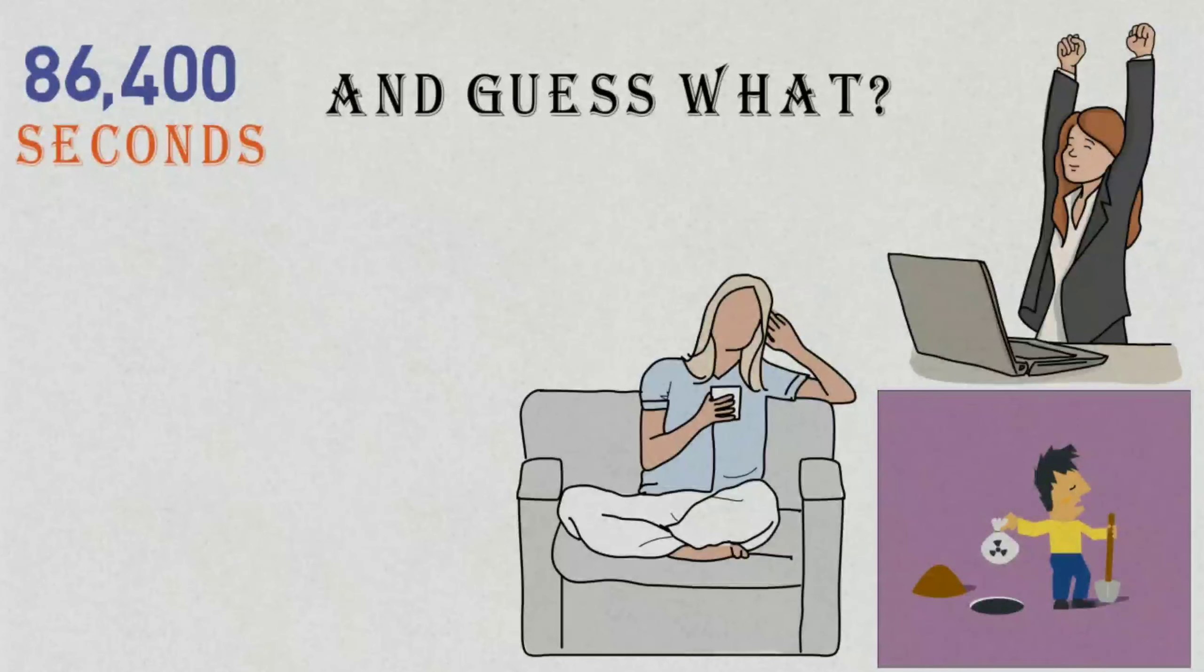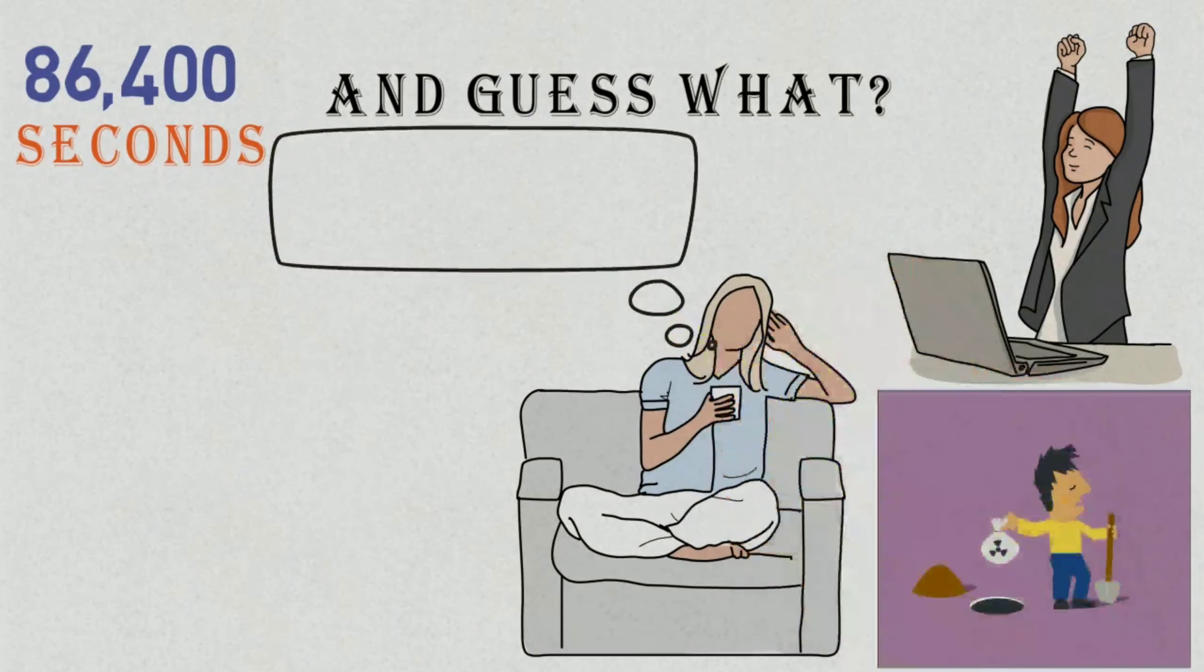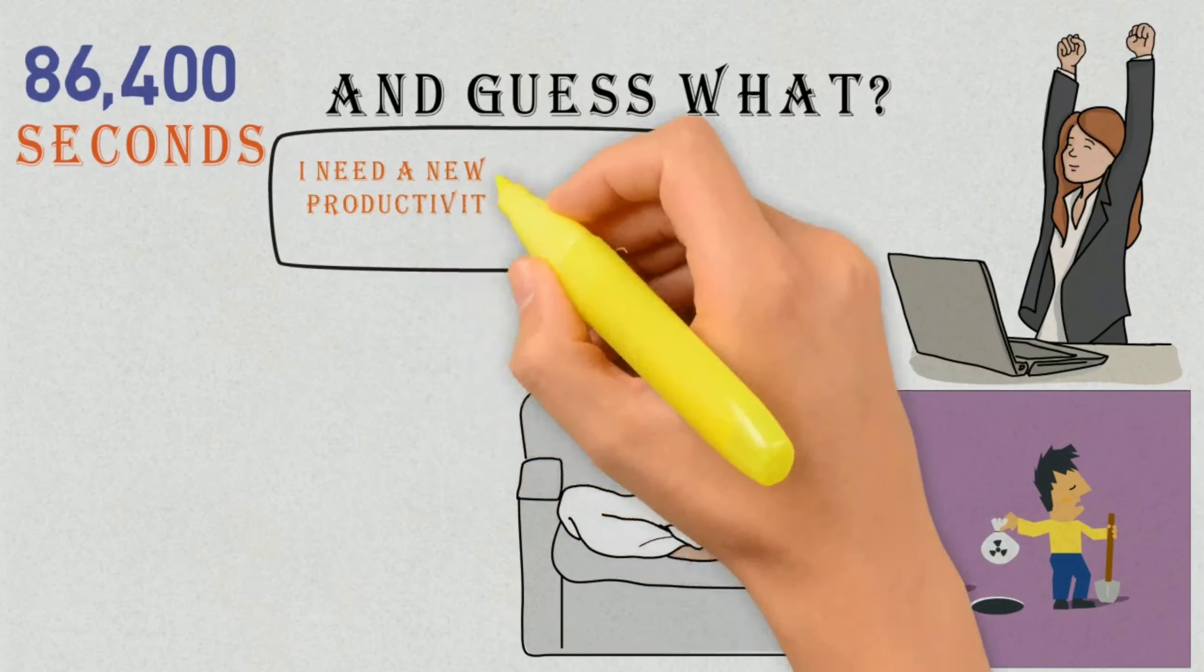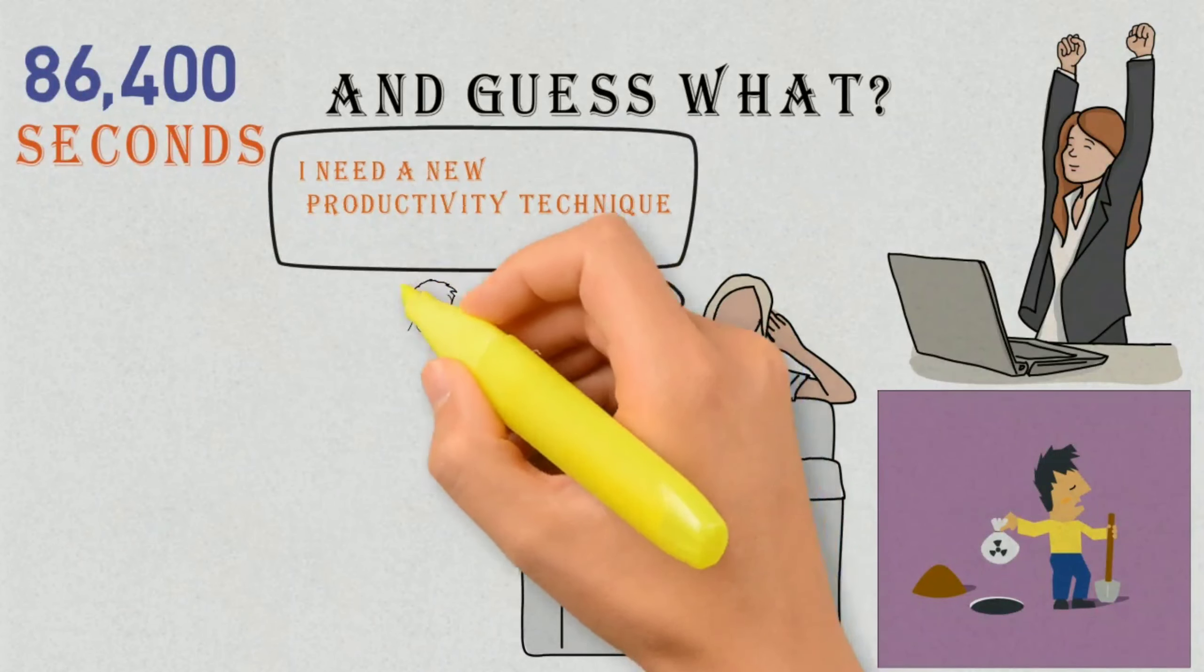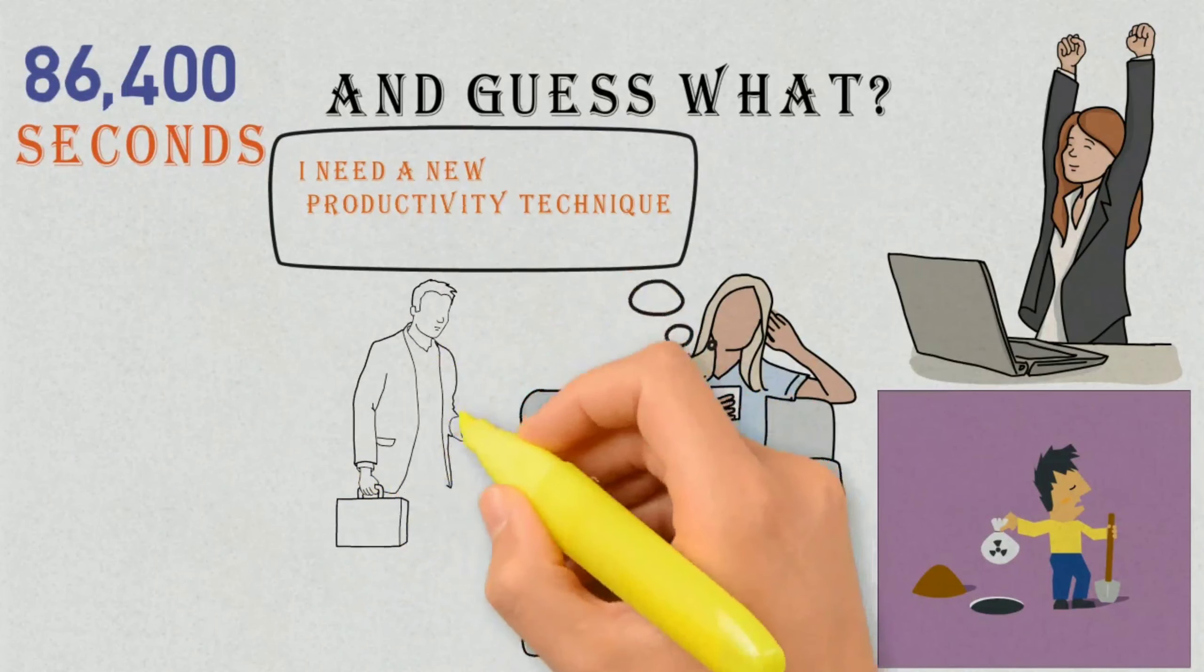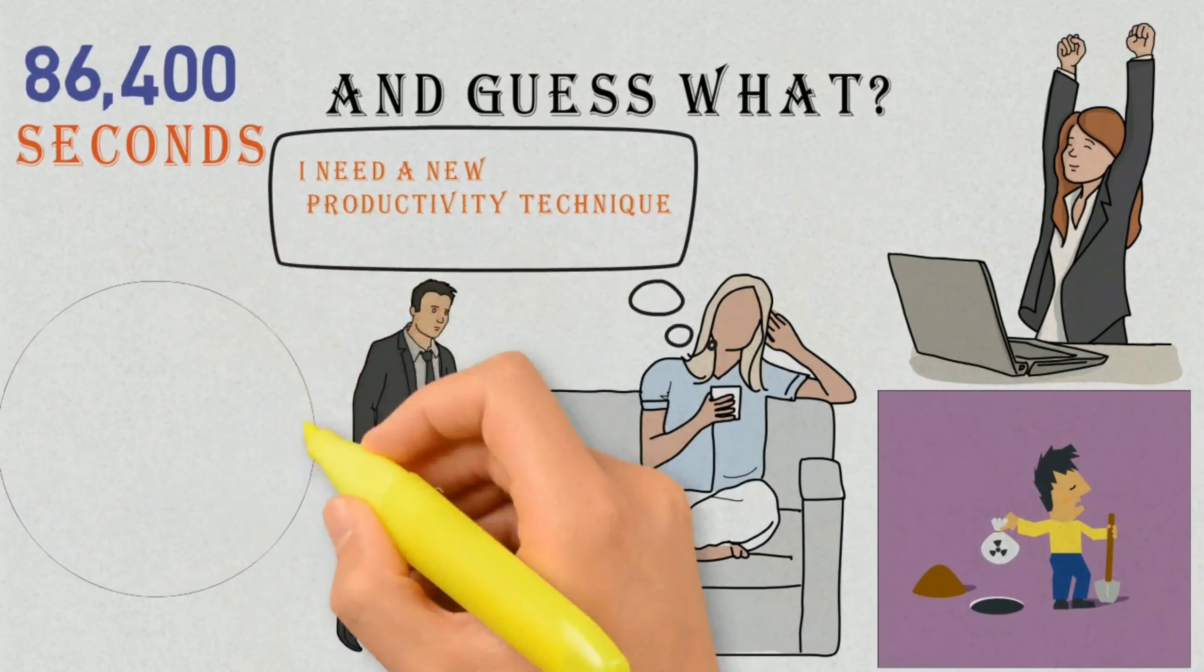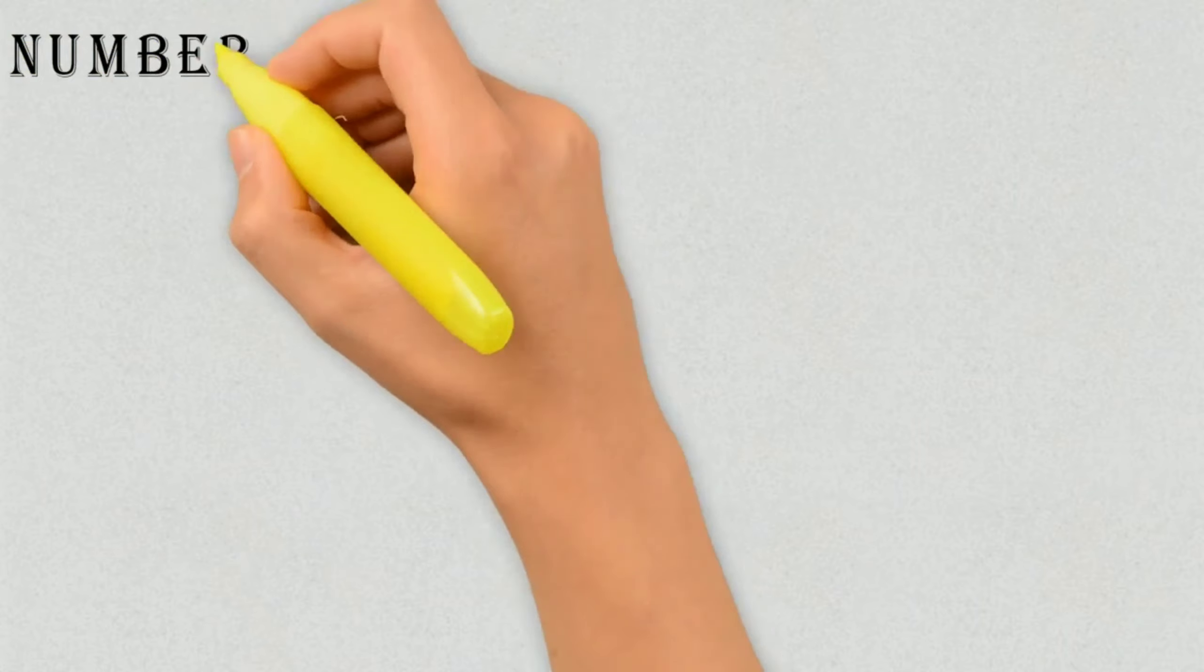You obviously spent that time somewhere, but it wasn't on the things you wanted to. Instead of trying to find another technique to make you more productive, you should look into which habits you're currently wasting so much time on. Sometimes to achieve success, it's not what you do that matters, but what you stop doing.